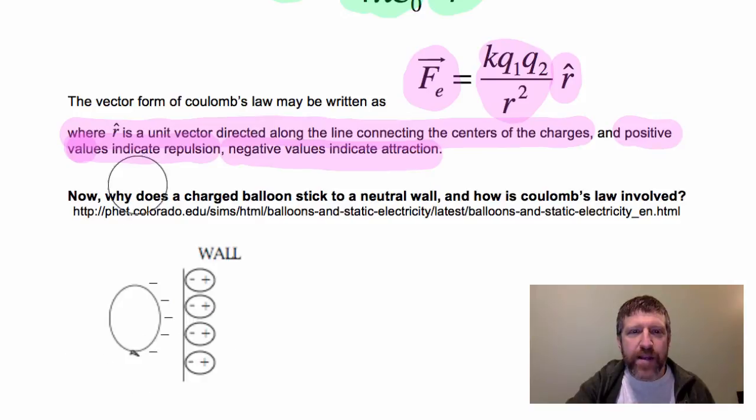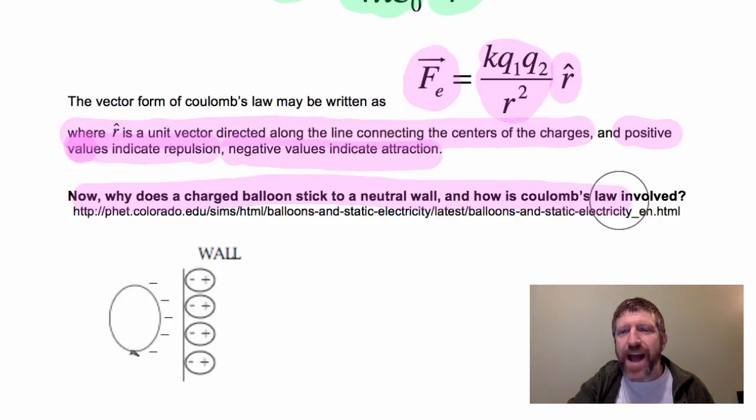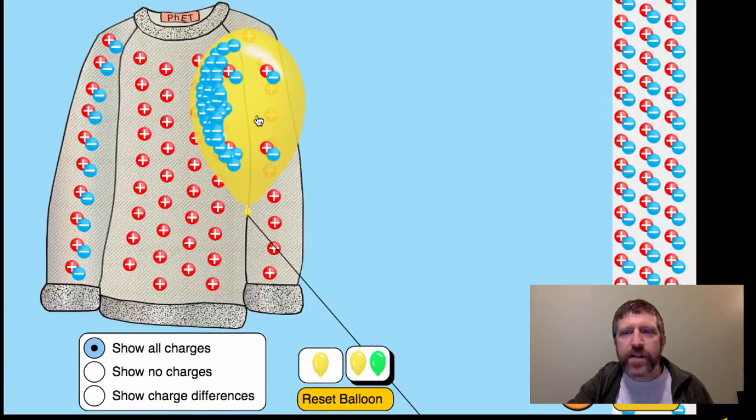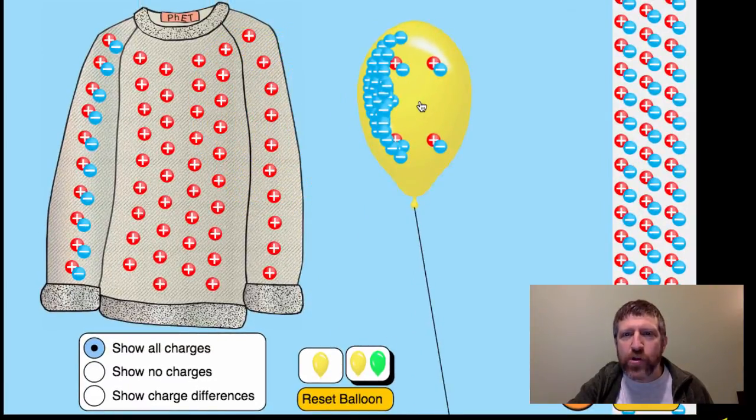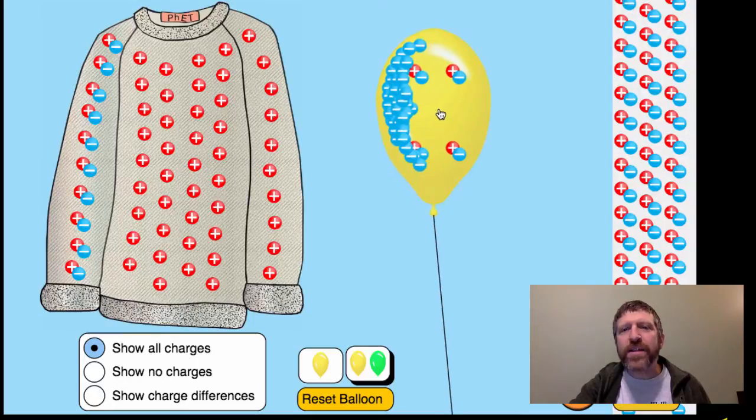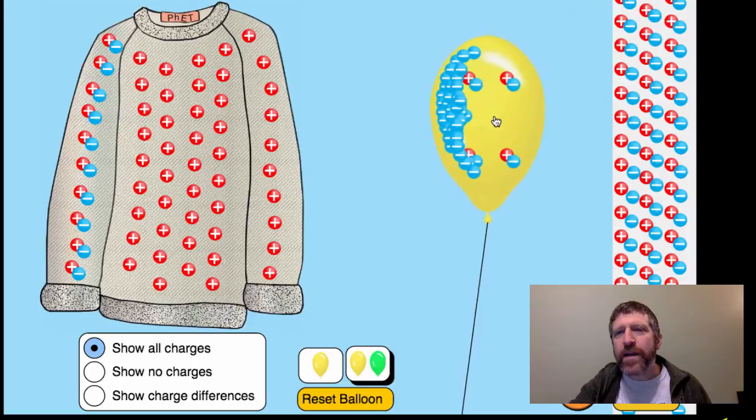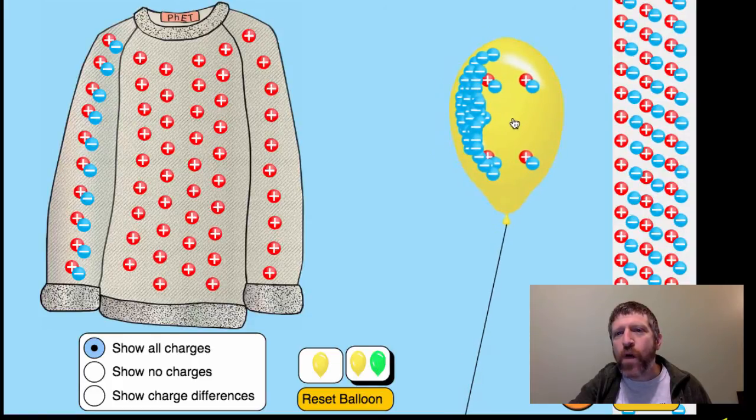Now we finally get to explain why that charged balloon sticks to the wall, even if it's neutral, and how is Coulomb's law involved. Here's my charged balloon. Notice that the wall is neutral, but watch what happens when I bring the charged balloon near the wall.